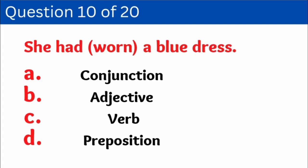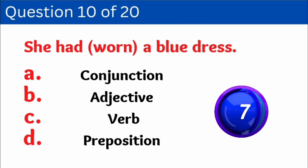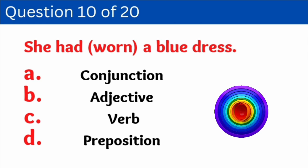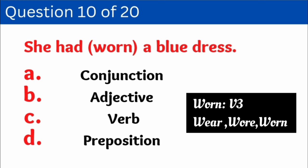Question number ten: 'She had worn a blue dress.' Here we have to identify how 'worn' is used as which part of speech. Options are: A. Conjunction, B. Adjective, C. Verb, D. Preposition. Worn is the third form of 'wear,' so the correct answer is verb — option C.